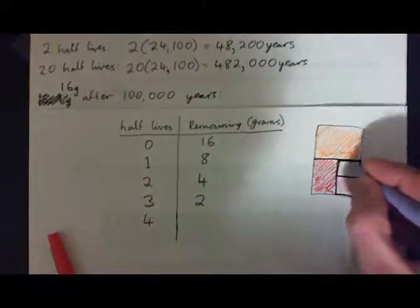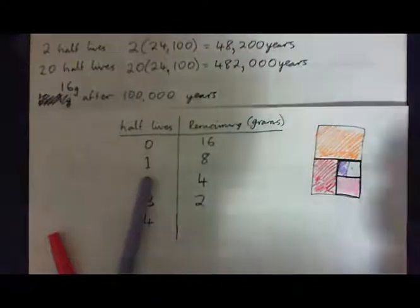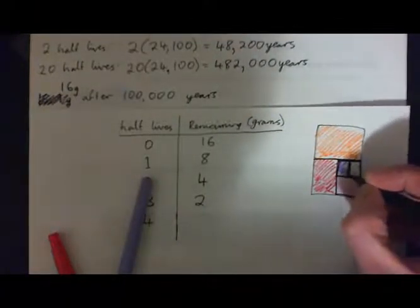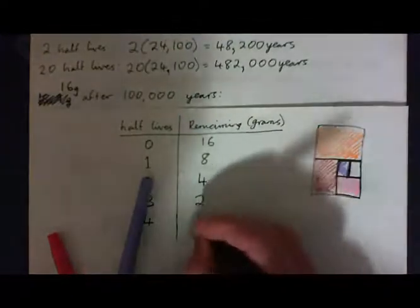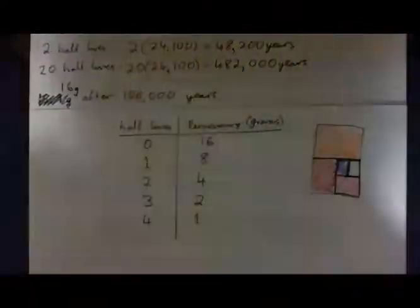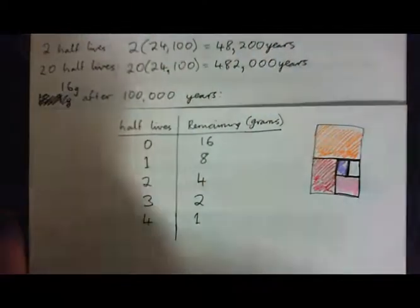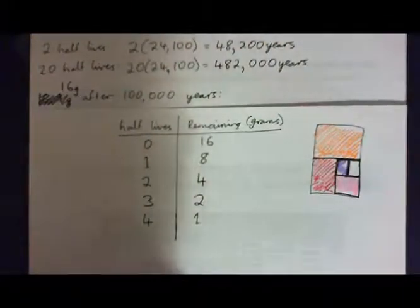Half of the previous amount — half of this goes away and disintegrates, and we're left with this little bit here. So we're left with half of that again: 1 gram. That's how it goes — you divide by two each time, or multiply by a half each time. Same thing, right? Multiply by a half each time.